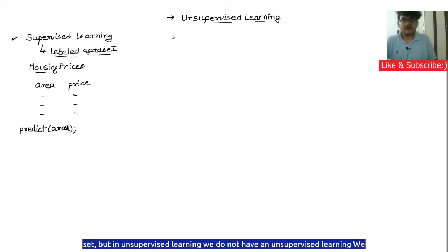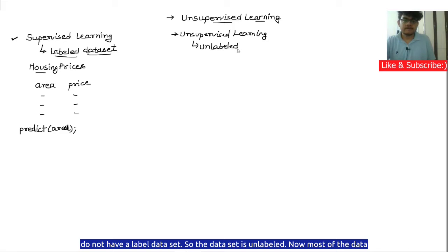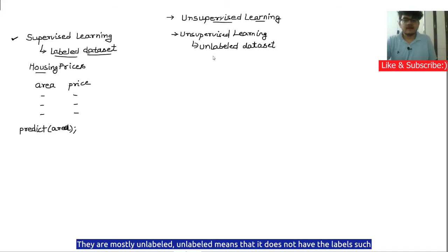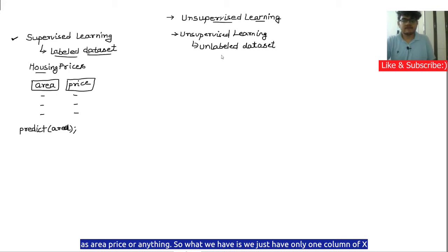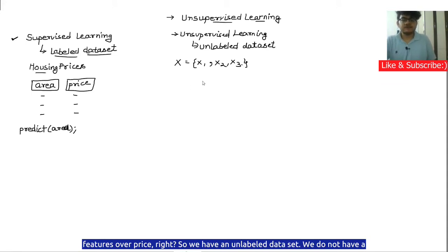So in supervised learning, we have a supervision of labels in a dataset. But in unsupervised learning, we do not have a labeled dataset — the dataset is unlabeled. Most of the datasets and applications available in the real world are mostly unlabeled. Unlabeled means they do not have labels such as area or price. We just have a column of features X, but no mapping of those features to a target like price.